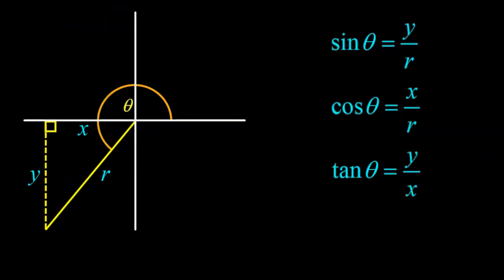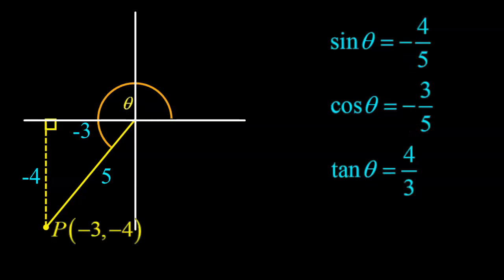Moving into quadrant number three, we've got the same definitions. I'll use a similar example, except this time we're to the left of the y-axis and below the x-axis, so the terminal arm passes through negative 3, negative 4.